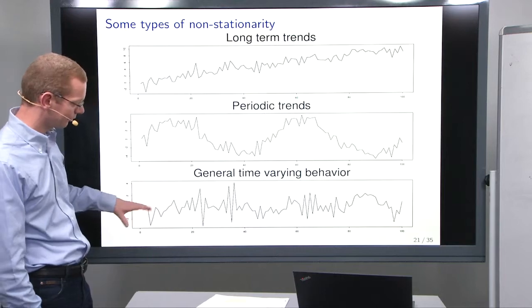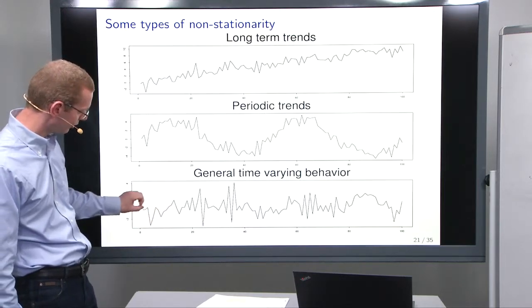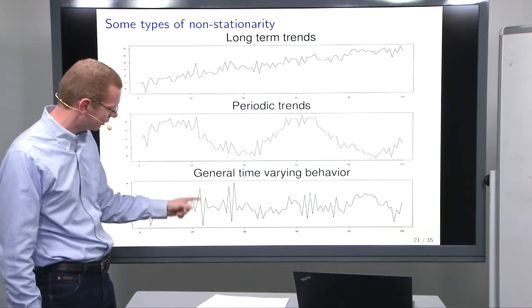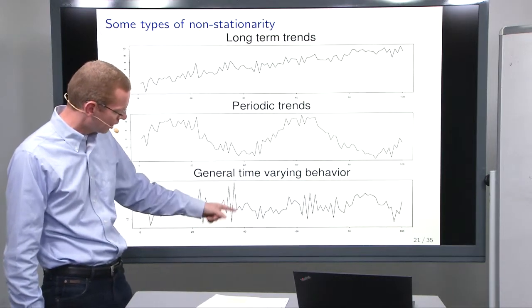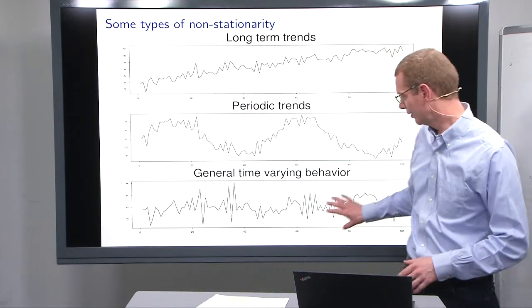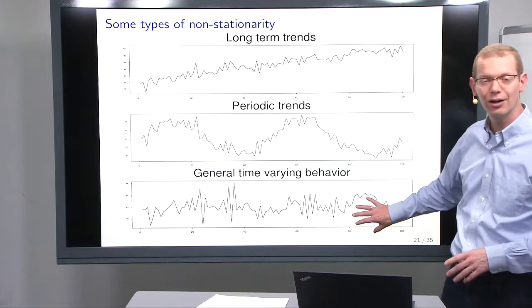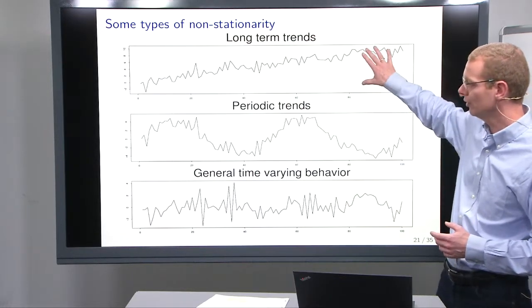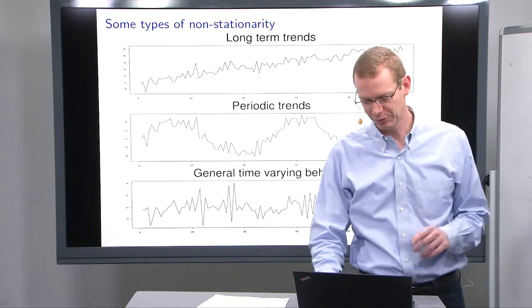Or then you may have something that is just a complex mixture. In this case you can see it seems like the variance is high in some parts, and less in some parts, and then you have other things happening. Now, for the latter part here, we may not always be able to find a good model within the scope of this course, but we will cover the other simpler parts.